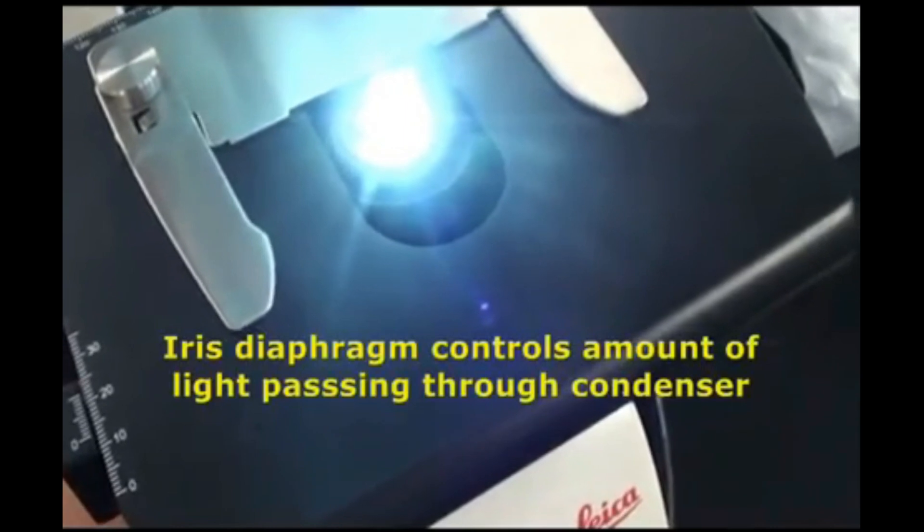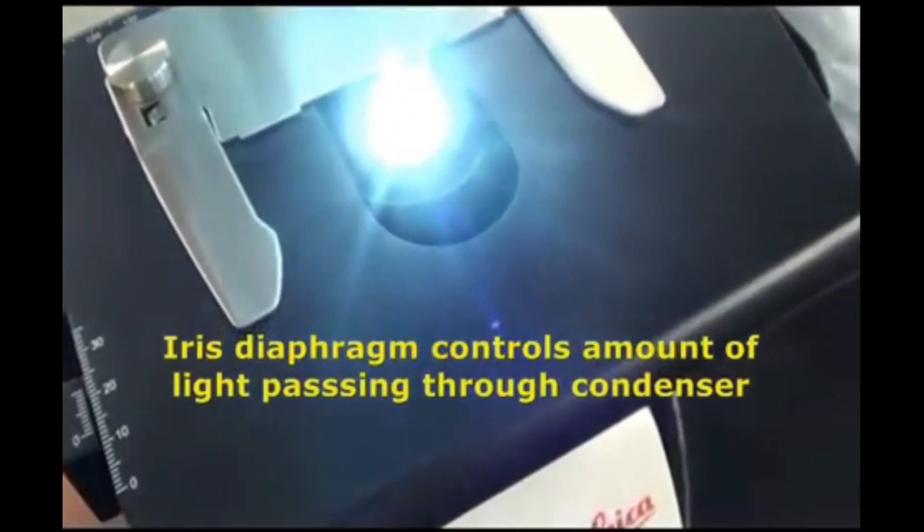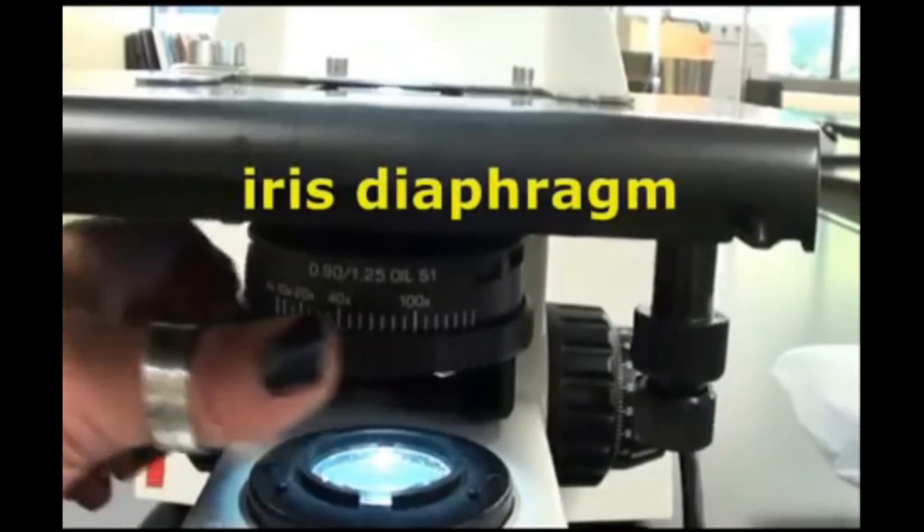Another way that your scope allows you to adjust the amount of light shining up through the specimen is through manipulation of the iris diaphragm. This mechanism is located directly beneath the stage and you twist it to open and close the iris.